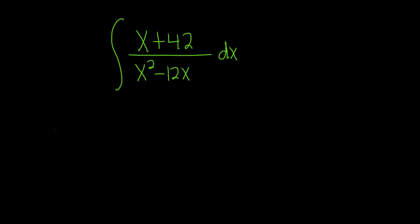we're going to start by factoring the denominator and attempting to use partial fractions. Let's rewrite it as x plus 42